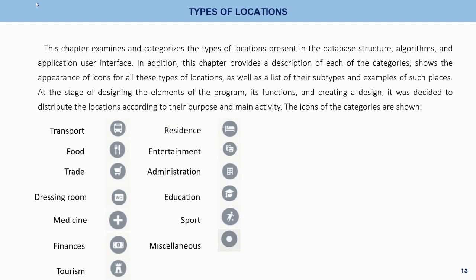Types of locations. This chapter examines and categorizes the types of locations present in the database structure, algorithms, and application user interface. It provides a description of each category, shows the appearance of icons for all types, and lists their sub-tags and examples. Locations are distributed according to their purpose and main activity. The categories include: transport, food, trade, dressing room, medicine, finances, tourism, residence, entertainment, administration, education, sport, and disclaimers.